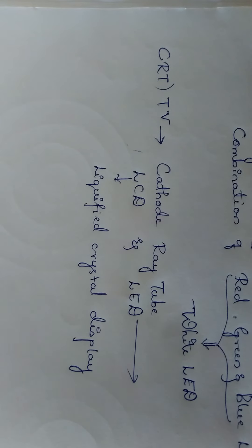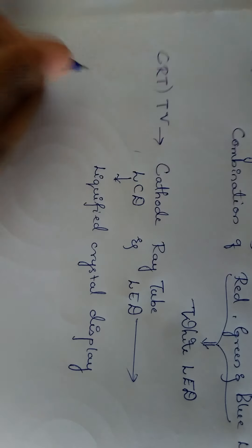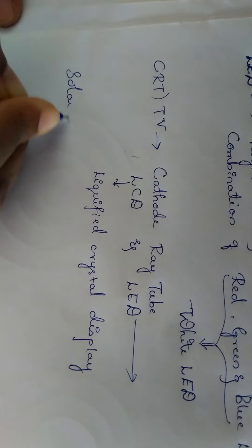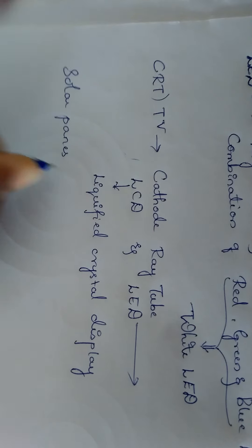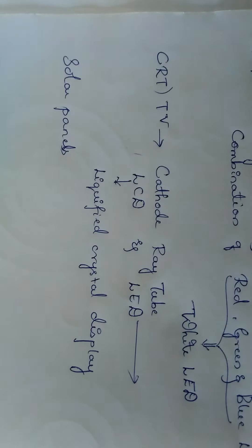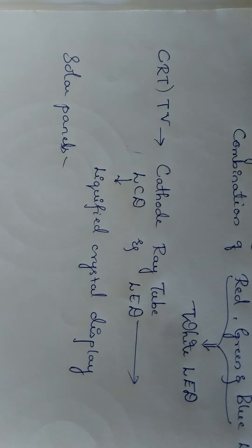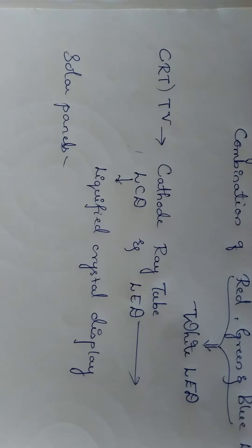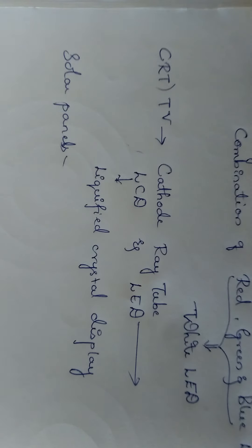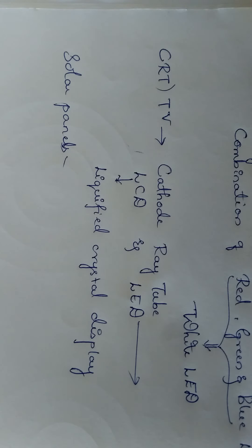Semiconductors are also used in solar panels. The panels are made with silicon and germanium, and when light falls on them they convert light into electrical energy. So semiconductors are used in various fields — they are reliable and cost effective.